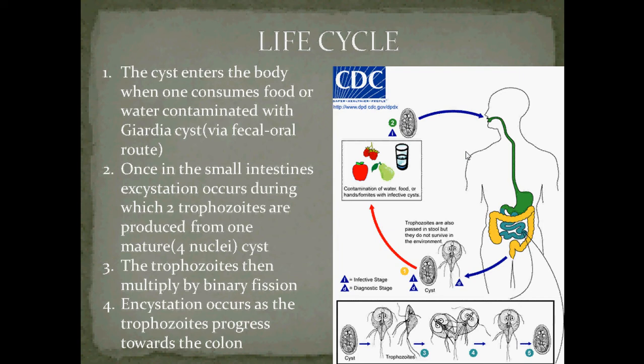The trophozoids then multiply by binary fission. Encystation occurs as the trophozoids progress towards the colon, and after that, together with the feces, they are shed. The cycle continues when one consumes a mature cyst.